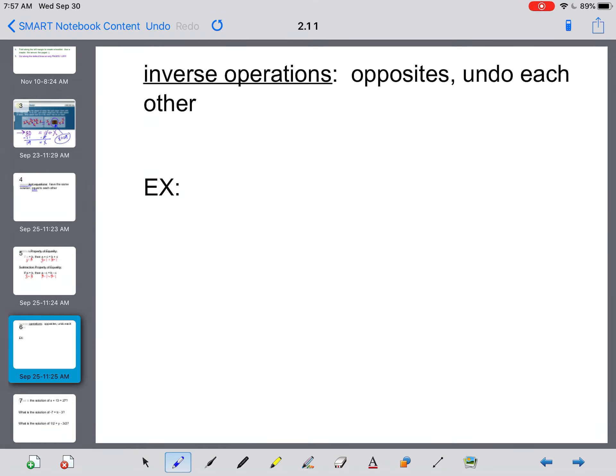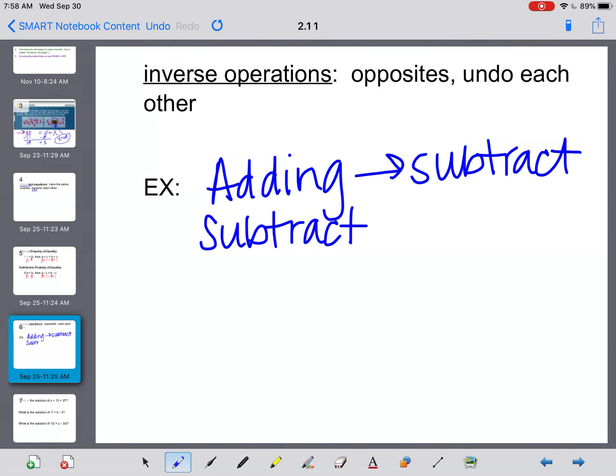Next vocab word: Inverse operations are opposites, or the different operations that undo each other. For example, if something is adding, the way to undo adding is by subtracting. And vice versa, if something is subtracting, to undo that, you would add.